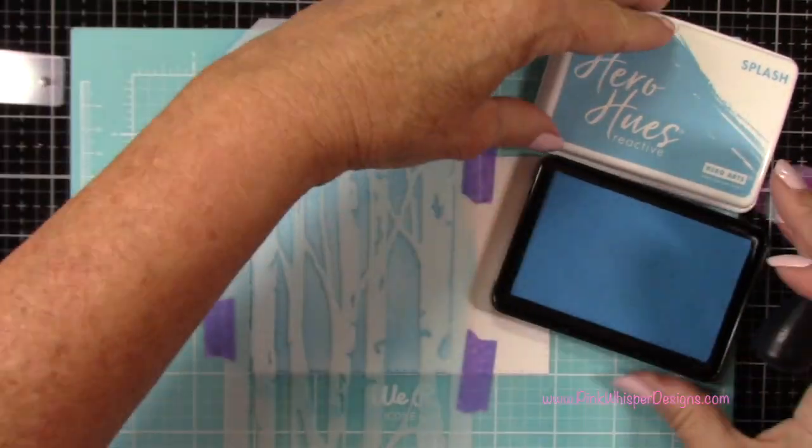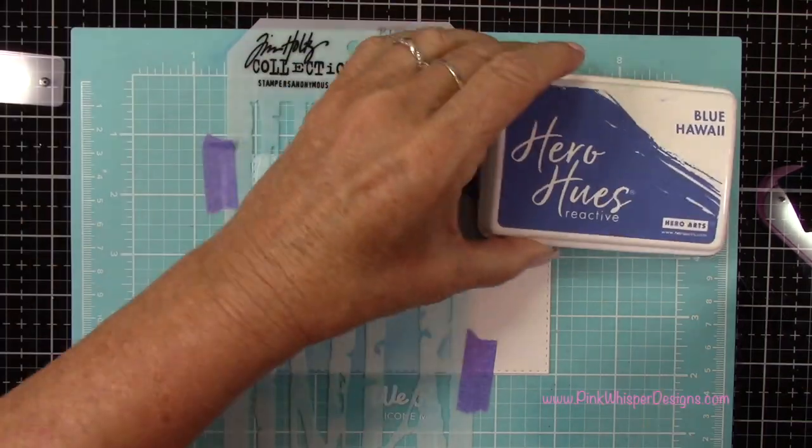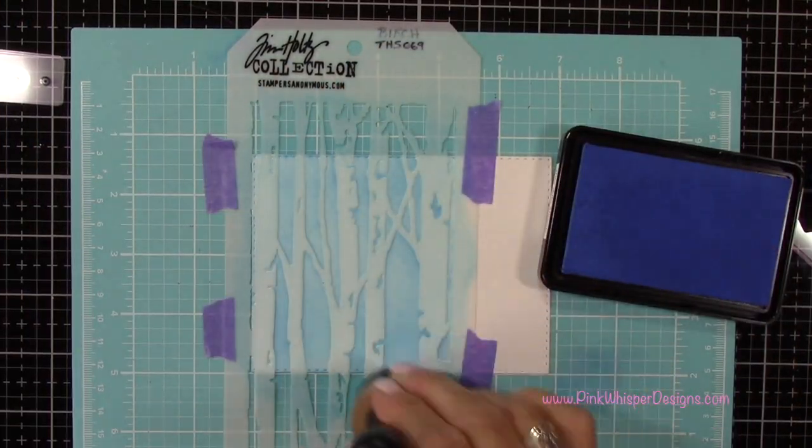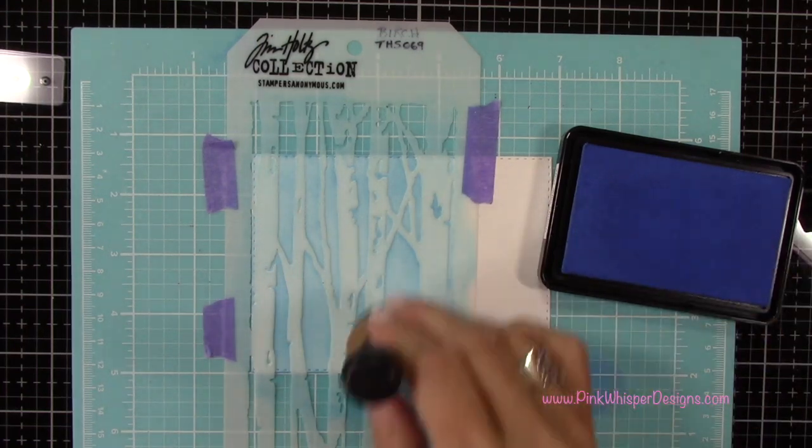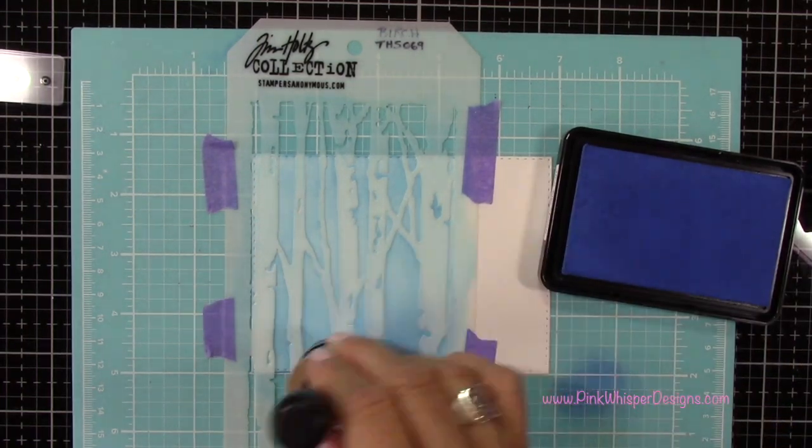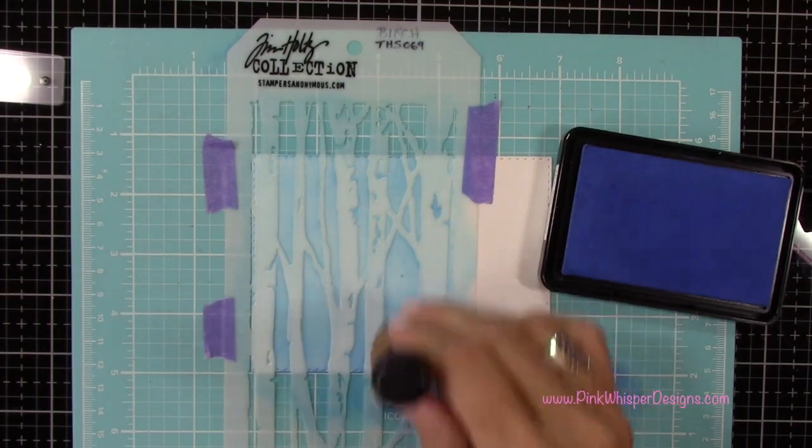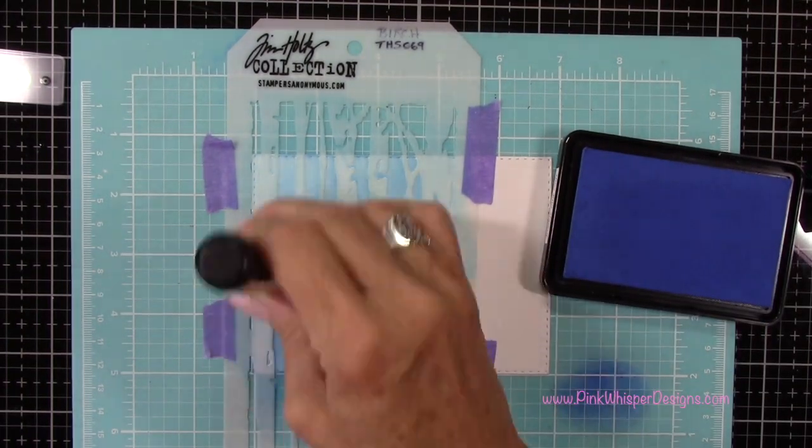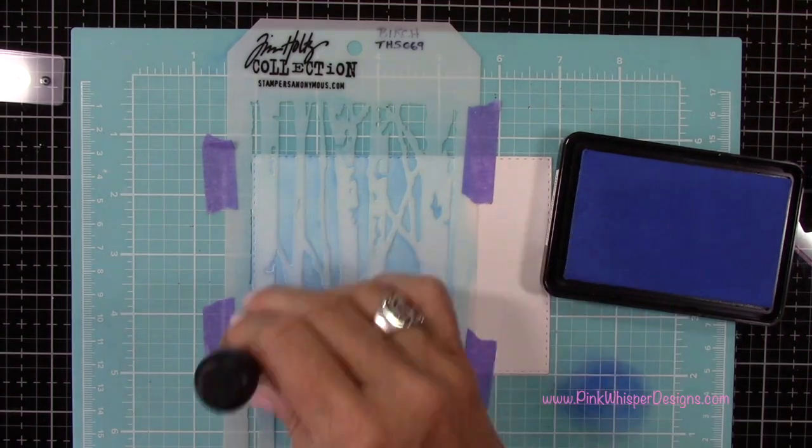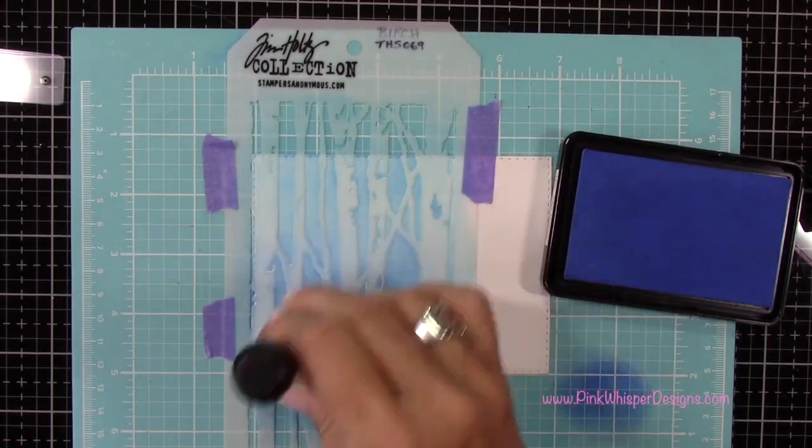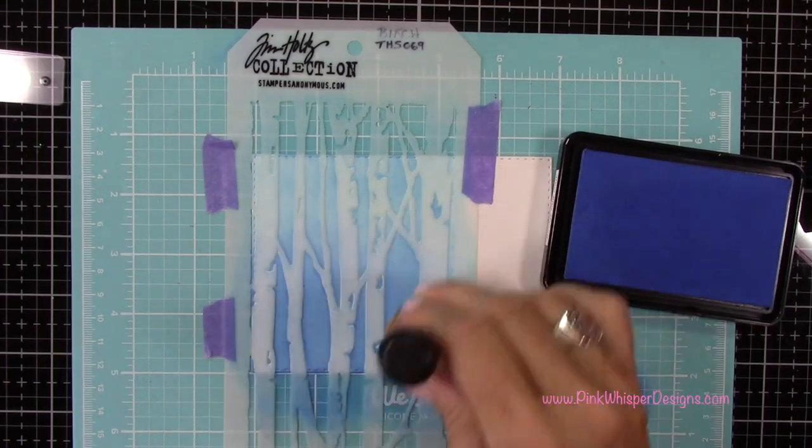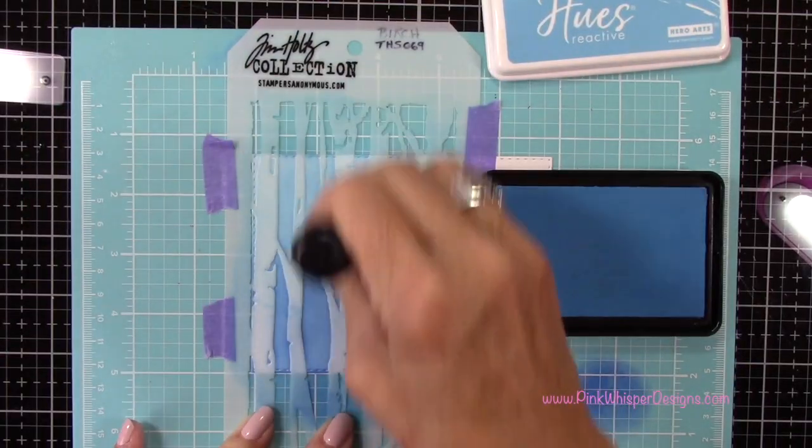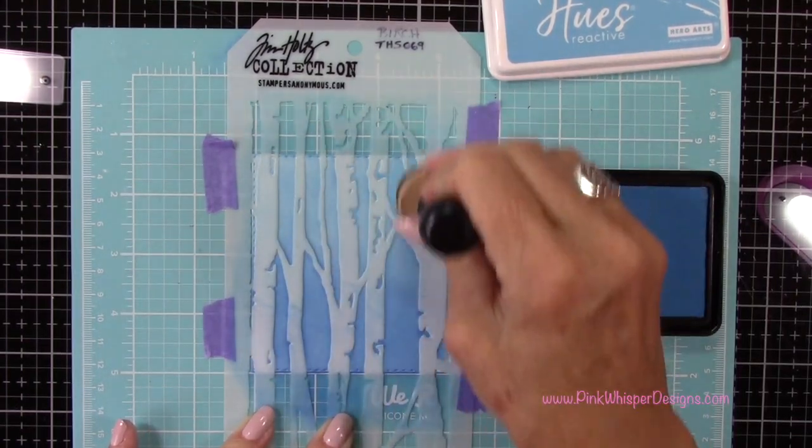Now once that's all set I'm going to grab that darker color which is the blue Hawaii. And again these are the Hero Arts Reactive Ink Pads. So these have a really smooth application. They go on really nicely and they blend so beautifully. And I'm going to have that darker color down towards the bottom here and I'll keep it lighter up towards the top. Then I'll go back and blend those two together with that lighter color again.